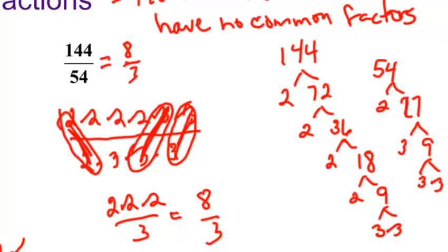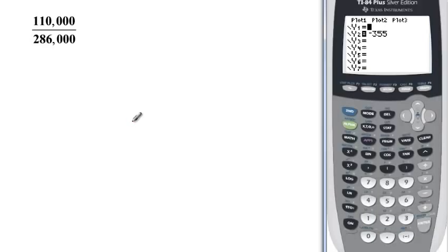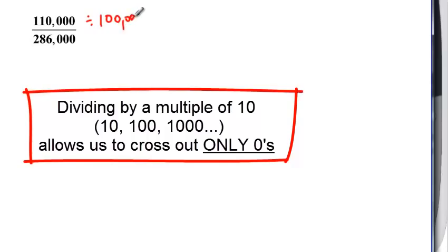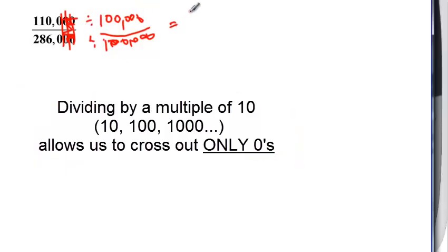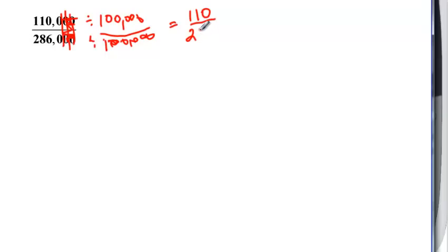One last example that you'll have common in your homework. This one is actually going to make me need my calculator. The first thing that you can see is that if I take these 2 numbers, they both have these 3 zeros at the back. That's kind of like dividing by 100,000. You normally can't do this with numbers, but if you have zeros, only zeros, then I can cancel out my zeros. Or if you're afraid you're going to make a mistake, divide by the 100,000. I just have 110 divided by 286.